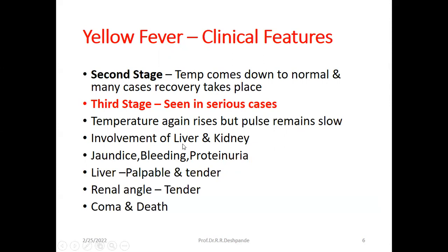In the third stage, there is involvement of the liver and kidney. As the liver is inflamed, jaundice will appear, along with bleeding and portal hypertension. Proteinuria indicates kidney involvement. The liver will be enlarged and tender — hepatomegaly. Renal angle tenderness indicates inflammation of the kidney, tested from the back below the lower tip of the scapula. Very few cases progress to coma and then death.